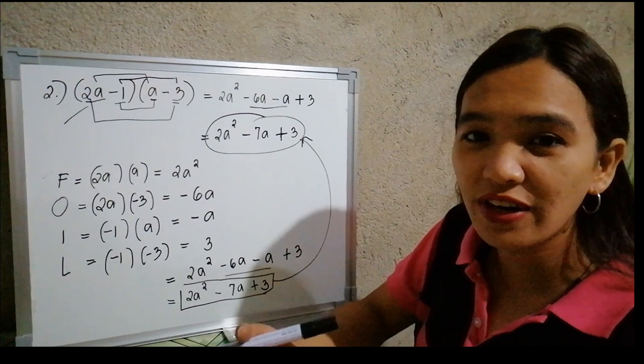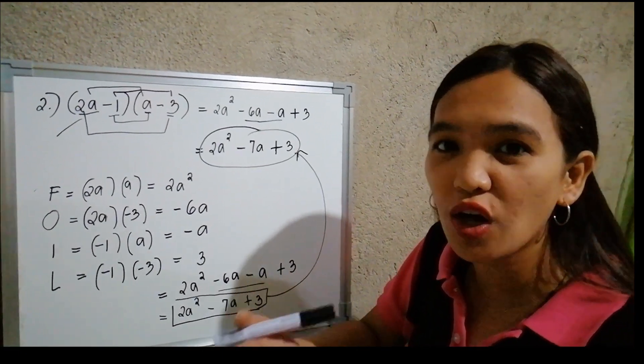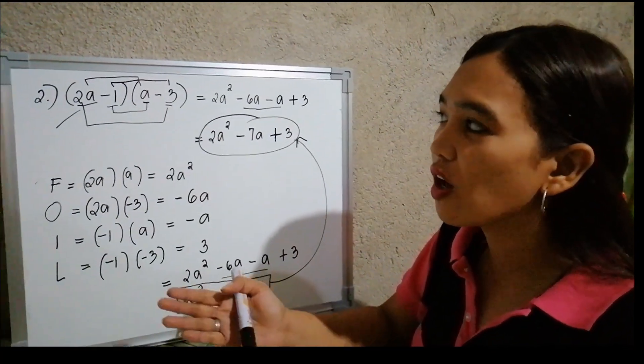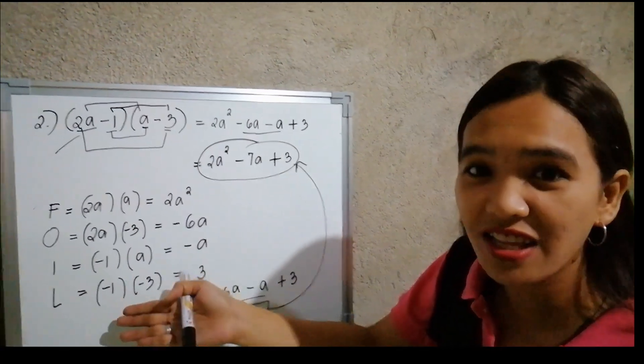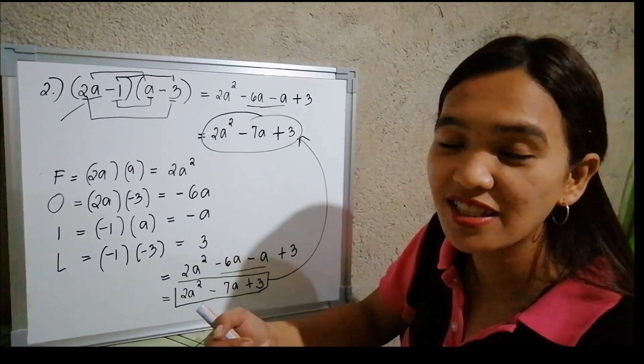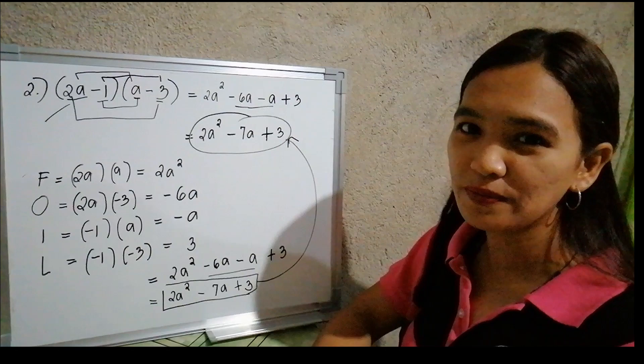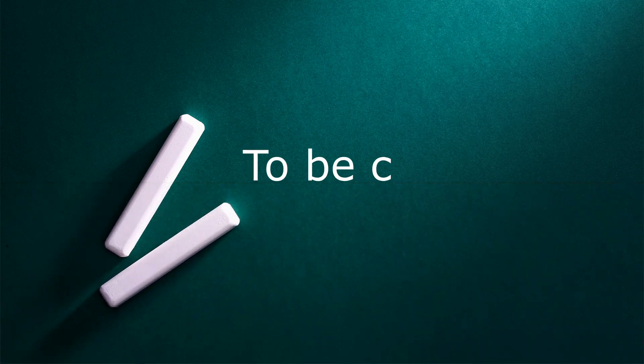So whether you use this method or the other, you will still arrive at the same answer. Thank you, that's all for today. Our next topic is still all about the Special Product Formula, but in Lesson 2, which is all about the square of a binomial. Stay tuned!